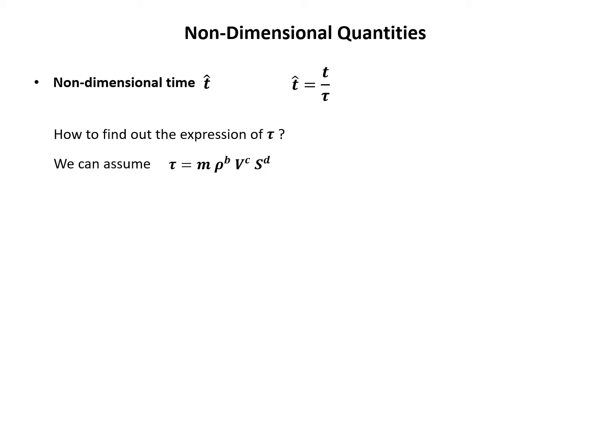Now we look at the non-dimensional time: t̂ equals t divided by τ, where τ is the denominator for the non-dimensionalization. The question is how do we find the expression of τ. We can assume τ equals m raised to some power times ρ to some power times V to some power times S to some power, and carry out dimensional analysis. We assume τ equals m^a · ρ^b · V^c · S^d, and the task is to determine b, c, and d. We rewrite τ knowing it should have the same dimension as time, which is seconds.